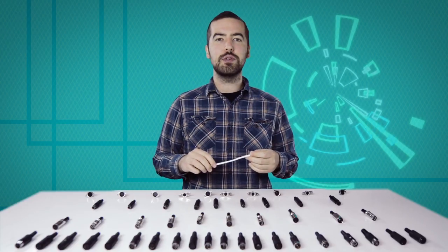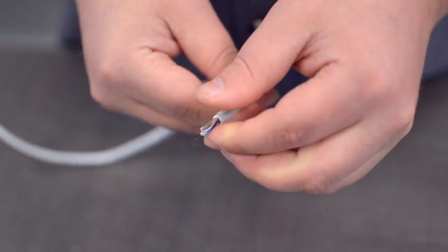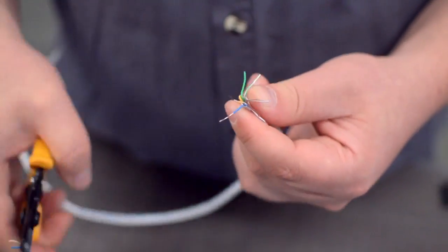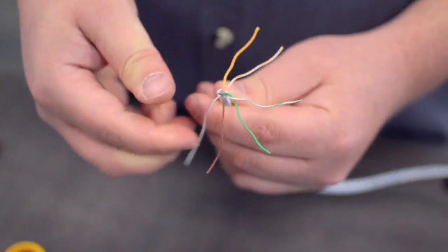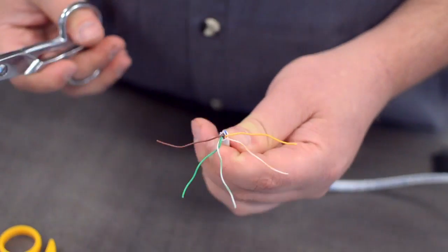For this example, we will be using CAT 5E cable. You will also need to strip the individual conductors. Trim off any additional conductors if needed.